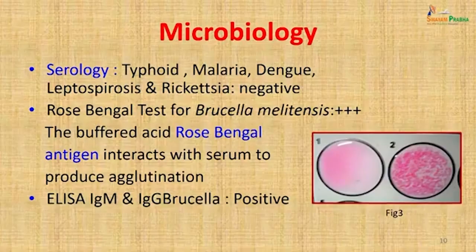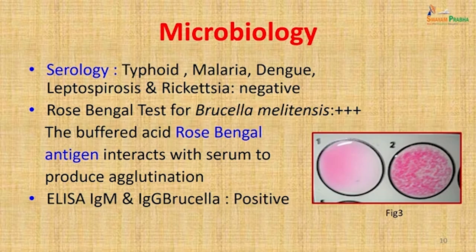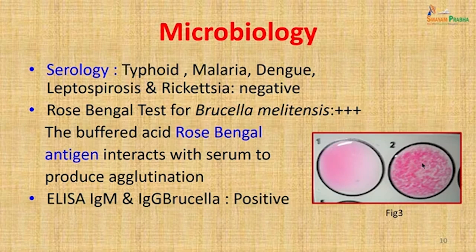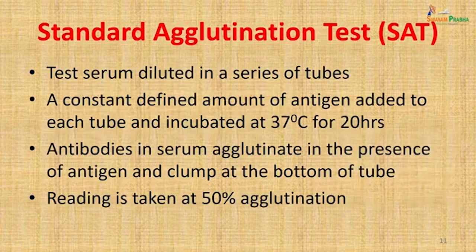Microbiological investigation was started keeping bacteria causing pyrexia of unknown origin in mind. Blood was collected in a plain bulb, serum was separated, and tests were done for typhoid, malaria, dengue, leptospirosis, and rickettsia — all were negative. The Rose Bengal test was then done for brucellosis. The buffered acid Rose Bengal antigen interacted with the serum and produced agglutination, making the test positive. ELISA IgM and IgG for Brucella were also positive, further indicating brucellosis.